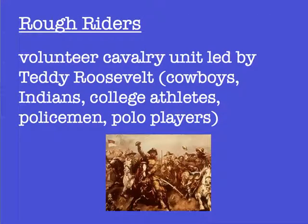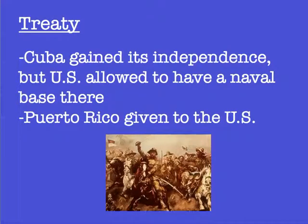One of the most famous fighting units formed during the war was the Rough Riders, formed by Teddy Roosevelt. He assembled this regiment from people he knew — those he'd associated with living out west when he was younger, people from college, and associates from his time as New York City police commissioner — and it was actually a pretty effective fighting force. The war lasted just over three months. The treaty that ended it granted Cuba independence from Spain, but allowed the United States a naval base at Guantanamo Bay, which we still possess today. The U.S. was also given Puerto Rico and the island of Guam. The United States helped liberate the Filipino people from the Spanish, then took control of the Philippines, remaining there until after World War II.